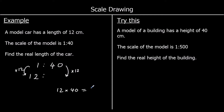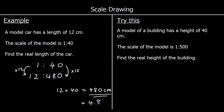12 times 4 is 48, add on the zero, so we get 480 cm. The real length of the car is 480 cm. If we wanted to write it in meters we would divide by 100, since 100 cm make 1 meter, giving us 4.8 meters.